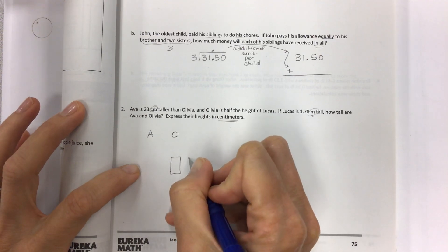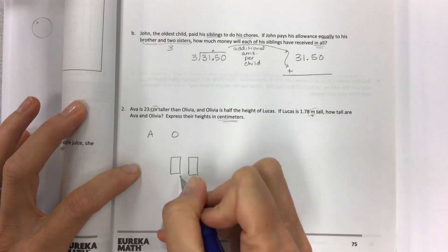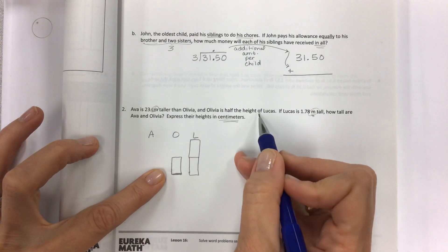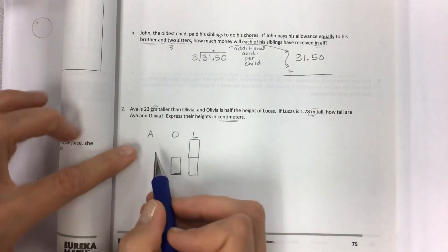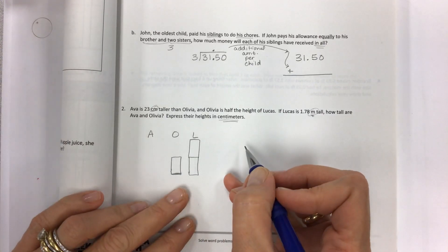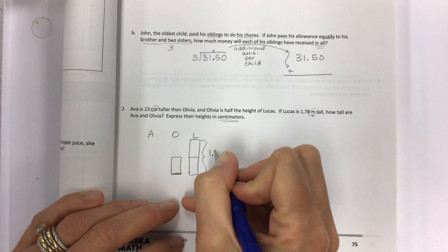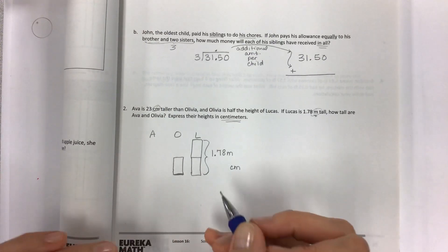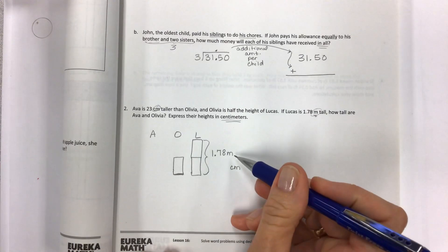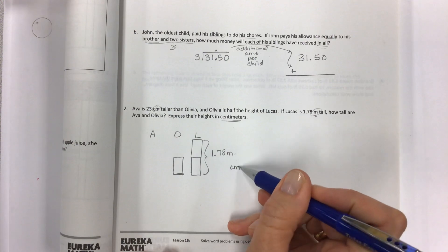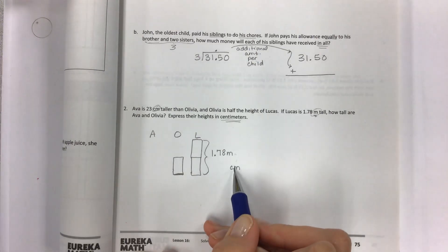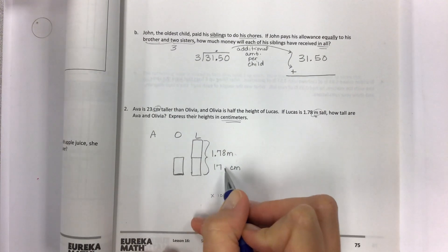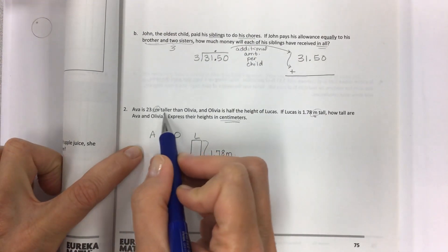If I have Ava and she is 23 centimeters taller than Olivia, so Olivia is the unknown. Olivia is half the height of Lucas, so here's Lucas - he is gonna be double Olivia because Olivia is half the height of Lucas, so Lucas is twice what Olivia is. If Lucas is 1.78 meters, this amount here is 1.78 meters but I need centimeters. This goes back to King Henry Died Unexpectedly Drinking Chocolate Milk - from meters to centimeters, that's a hop of two place value positions. We're going from a large unit to a smaller unit and we're gonna have to multiply by 100. You're gonna end up with 178 centimeters.